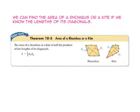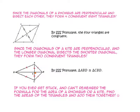We can find the area of a rhombus or a kite if we know the lengths of its diagonals. Theorem 10-5 states: the area of a rhombus or a kite is half the product of the lengths of its diagonals — one-half times diagonal 1 times diagonal 2. Since the diagonals of a rhombus are perpendicular and bisect each other, they form 4 congruent right triangles. For a kite, the diagonals are also perpendicular, and the longer diagonal bisects the shorter diagonal, forming 2 congruent triangles. If you can't remember the formula, find the area of the triangles and add them together.